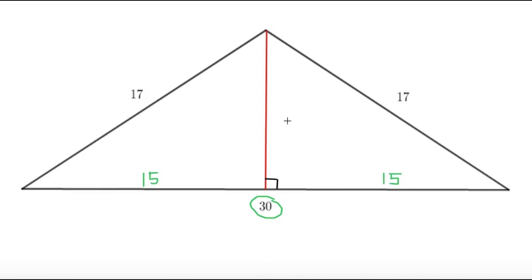What's nice about this is that if we call this h, we now have a right triangle. We have the Pythagorean theorem to tell us that 15 squared plus h squared equals 17 squared.